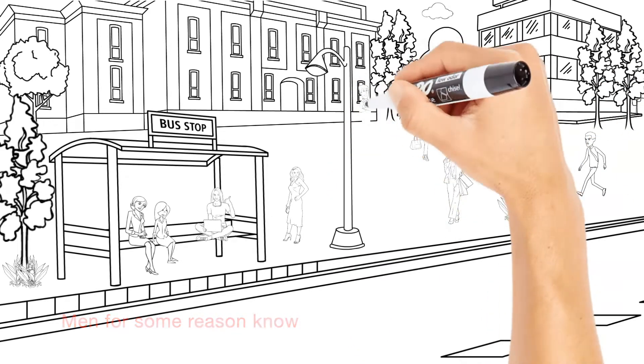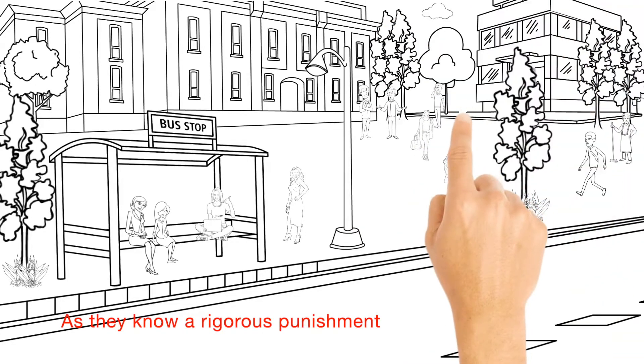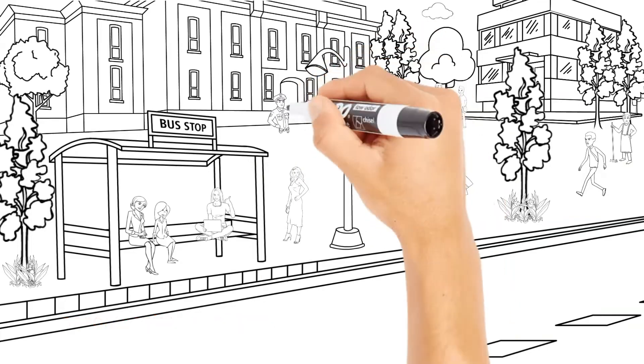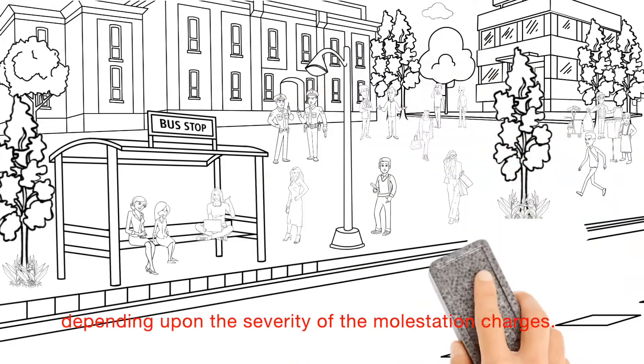Men for some reason know how to behave here, at least in public. Else they know a rigorous punishment awaits them in prison, accompanied by caning. And the caning count varies depending on the severity of the molestation charges.